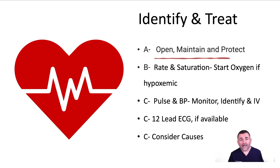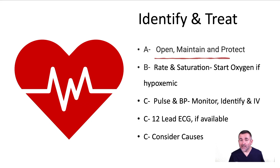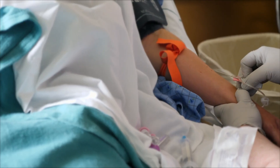Once bradycardia has been identified, ensure that the airway is opened, maintained, and protected. Check the breathing rate and saturation, and if hypoxemic, provide oxygen or assist breathing as necessary. Check the heart rate and blood pressure. Get the monitor on, identify the rhythm, and get IV access.